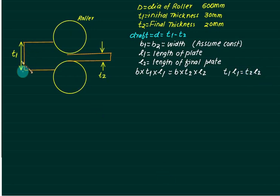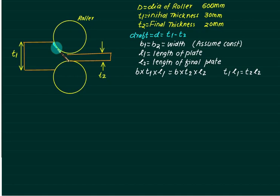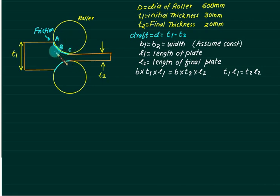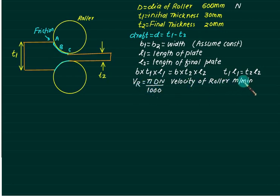We have a strip being reduced to final thickness T2 with no external force applied — there is pure friction at this point. The plate is pushed inside and friction occurs from the surface, dragging the plate. The contact starts at point A, point B is also a contact point, and at point C the contact exits. The velocity V = πDN/1000 is the velocity of the roller in meters per minute, where N is the rotational speed.